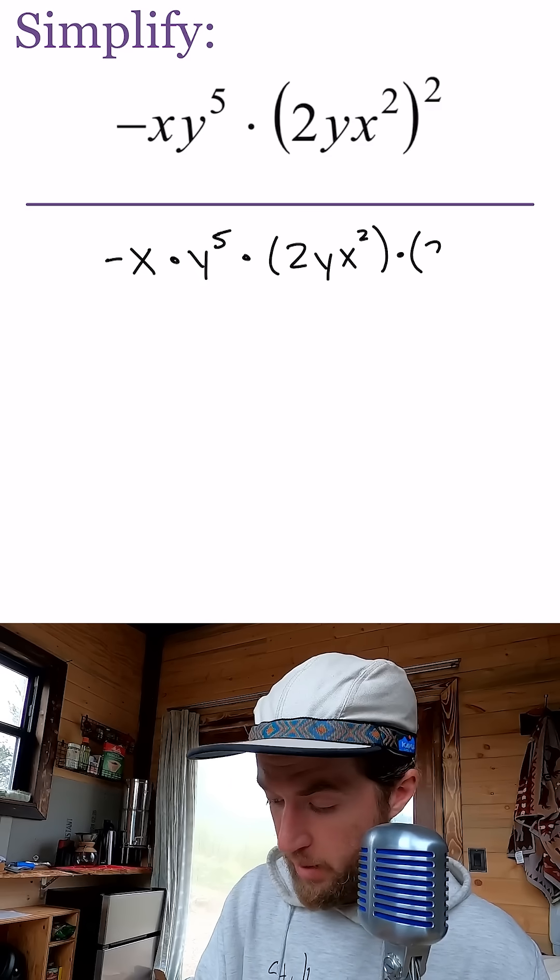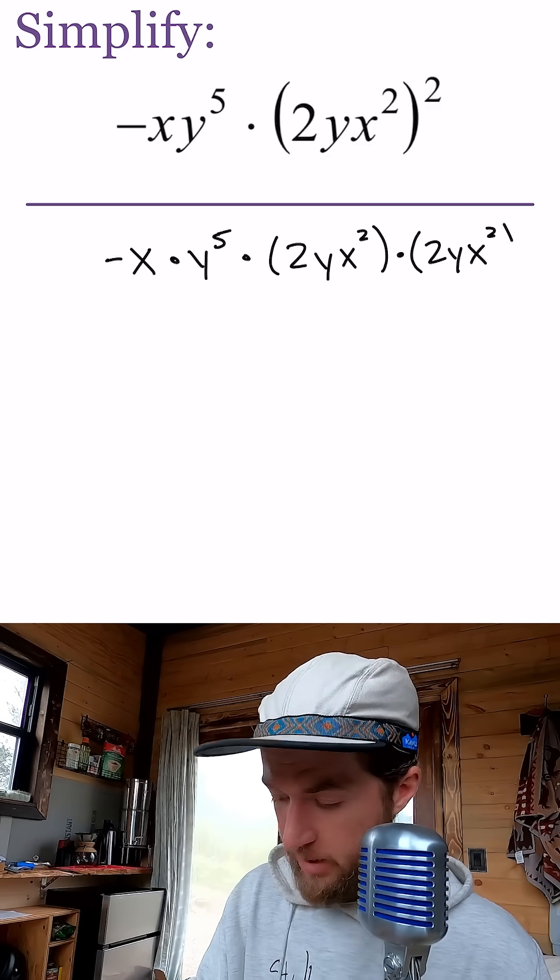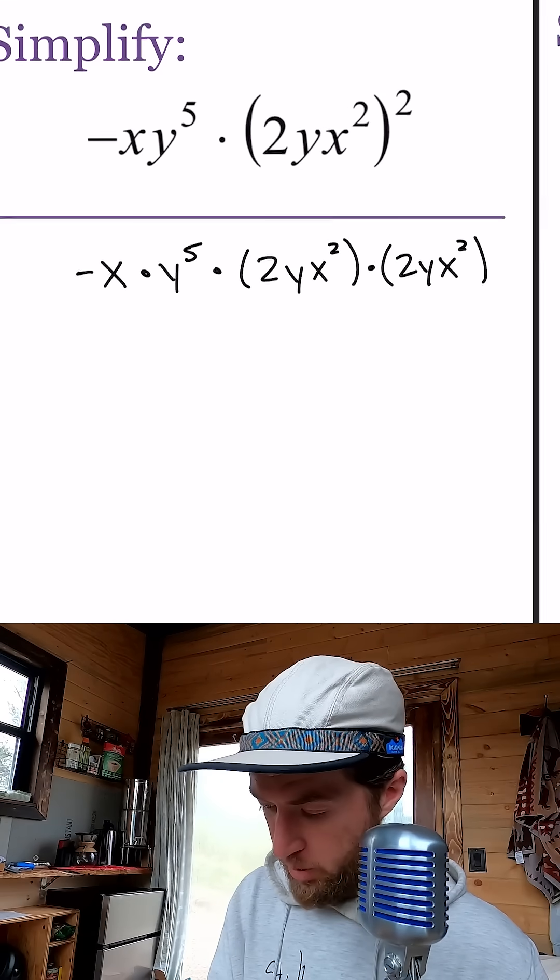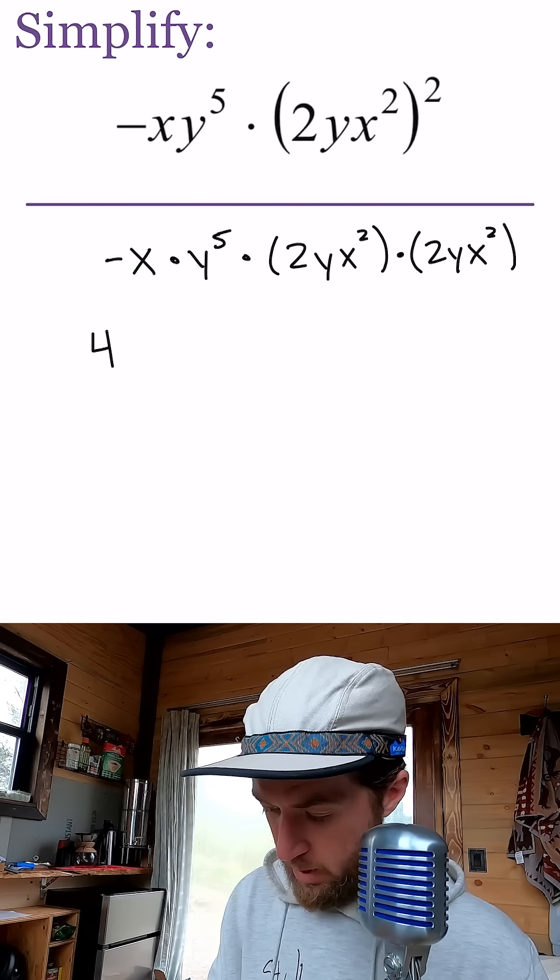So I'm just going to multiply it by itself again. This is the same thing as squaring, right? And we'll just go ahead and combine our numbers. So two times two is four.